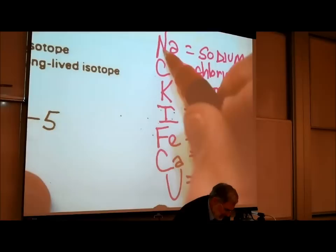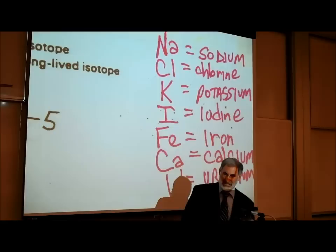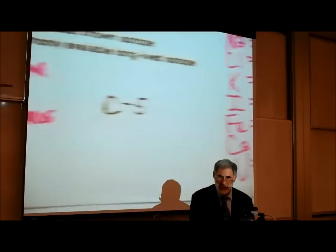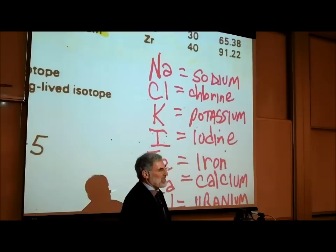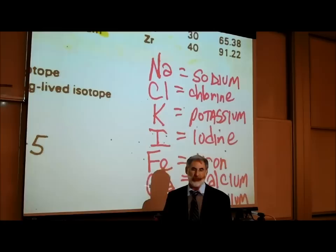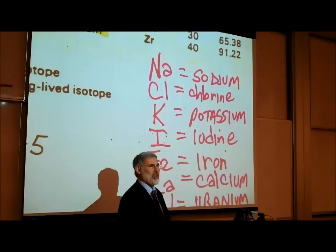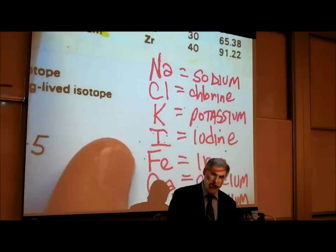They could not use S for sodium because S had already been used for sulfur. So they asked what did the ancient Greeks call sodium — they called it natrium. So they used the symbol Na for natrium, which is what the ancient Greeks called sodium or salt.